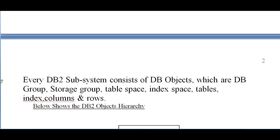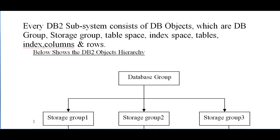Every DB2 subsystem consists of DB2 objects, which are DB2 groups. These are divided into storage groups, then tablespace, index space, tables, index, columns, and rows.